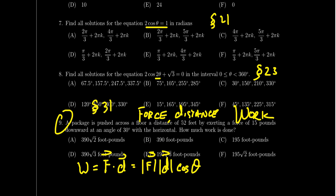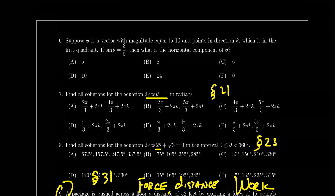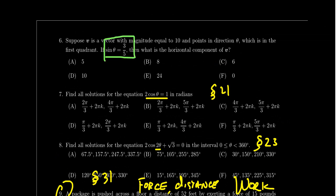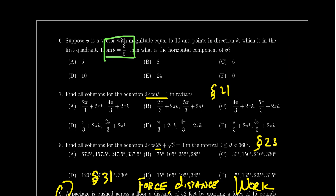That finishes up the multiple-choice section. One extra note on question six: you're given sine θ = 3/5 rather than a direct angle because you don't have a calculator on the multiple-choice section. You can't compute arc sine of 3/5 or evaluate sine of 55 degrees. Instead, draw a right triangle to find cosine θ when you need the horizontal component. Be prepared for those types of calculations.